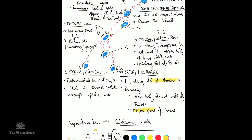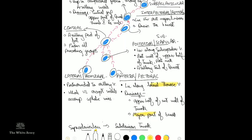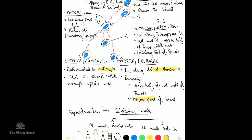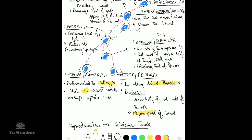Second is the lateral or humeral group of lymph nodes, which lie along the posterior medial part of the axillary vein near the head of the humerus; they drain the whole of the upper limb. Third is the posterior or subscapular group, which lies along the subscapular vessels and drains from the posterior wall of the upper half of the trunk, the posterior part of the neck, and importantly the axillary tail of the breast.